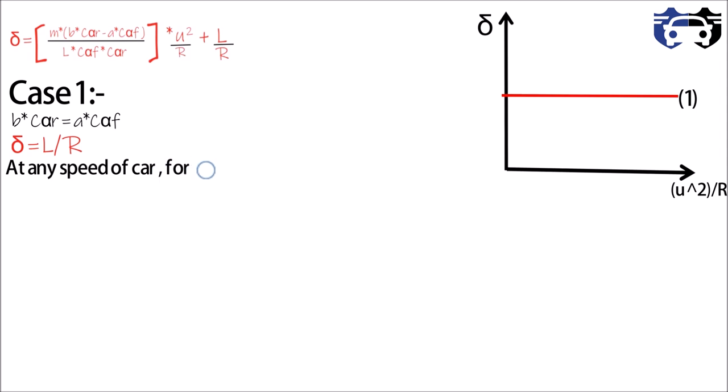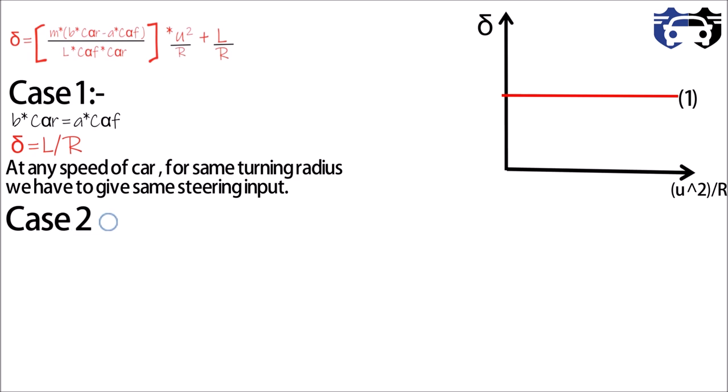At any speed of car, for the same turning radius, we have to give the same steering input. Okay, now Case 2 is b*C_alpha_r > a*C_alpha_f. Let this value be K1. Now we can write delta = K1*(u^2/R) + L/R.